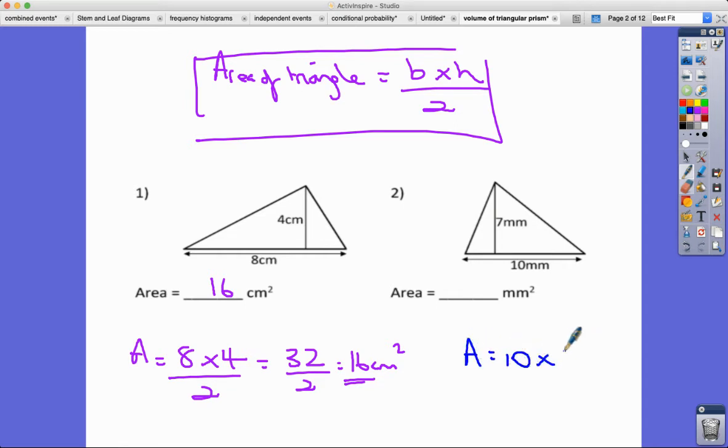Over here we've got the base which is 10 multiplied by the height which is 7, divided by 2, which in this case is 70 divided by 2, which is 35. In this case, millimeters squared because these measurements were millimeters, so 35 millimeters squared.